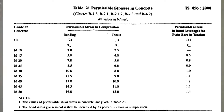Coming to the permissible stresses in bond for plain bars in tension, there is no simple relationship like for compression — the factor of safety ranges from about 35 to 45. Since this is not very reliable, fewer exam questions come from this part. From the notes at the bottom of the table we can see that the average bond stress can be increased by 25% for bars in compression, since concrete obviously takes more compressive stress.